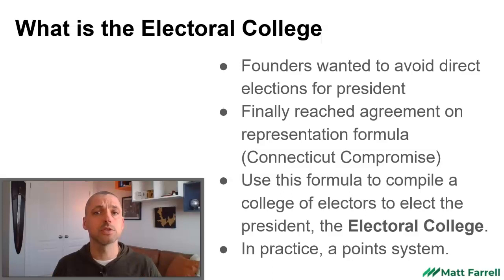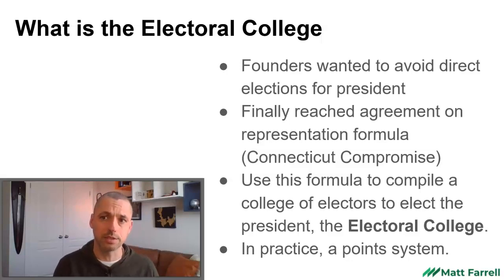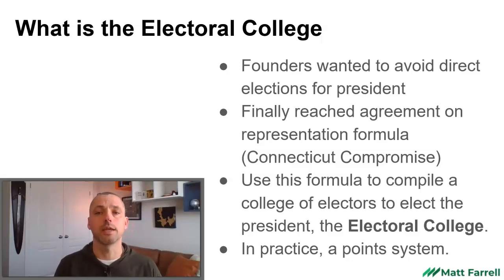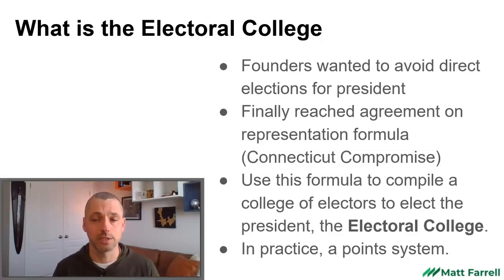However, they also wanted a separation of powers. They didn't really want the President to be beholden to Congress, so what they ended up doing was creating a body numerically just like Congress, called the Electoral College. This was after a lot of negotiation trying to figure out the representation formula in Congress, which was from the Connecticut Compromise.